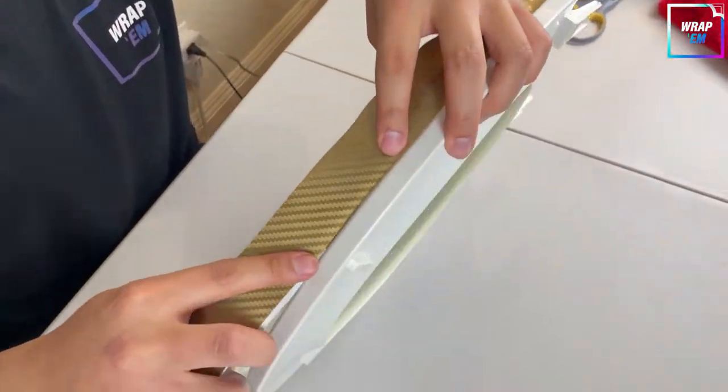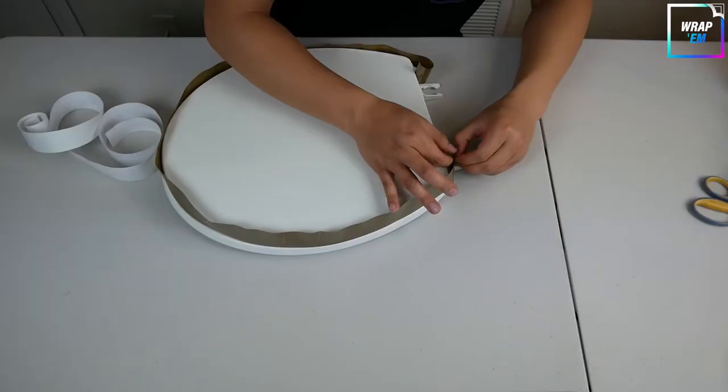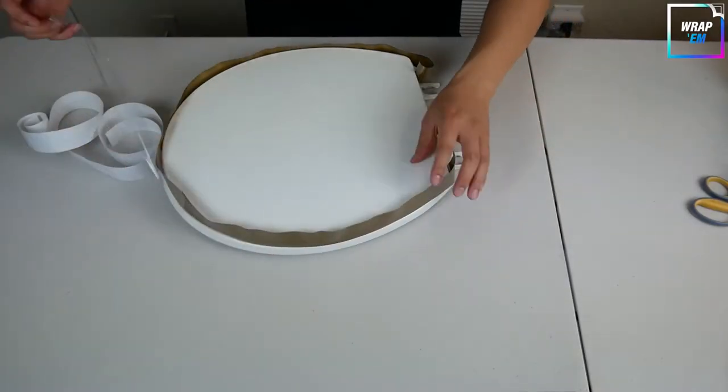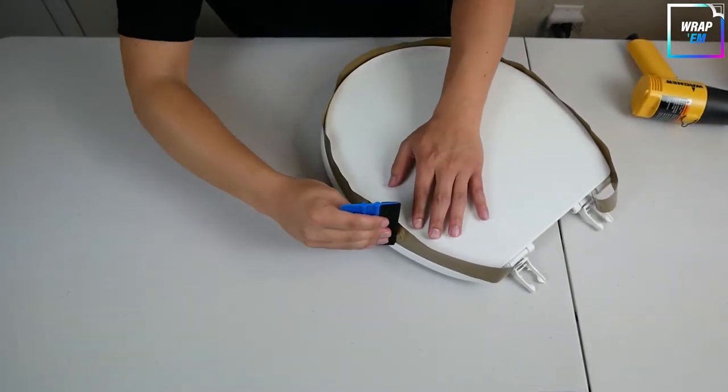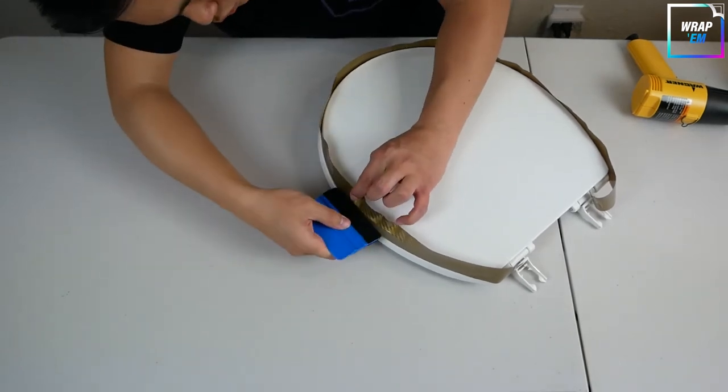Firmly press your finger while you're laying the vinyl. Once you're done, grab a squeegee and run it along the perimeter and make sure there are no bubbles.